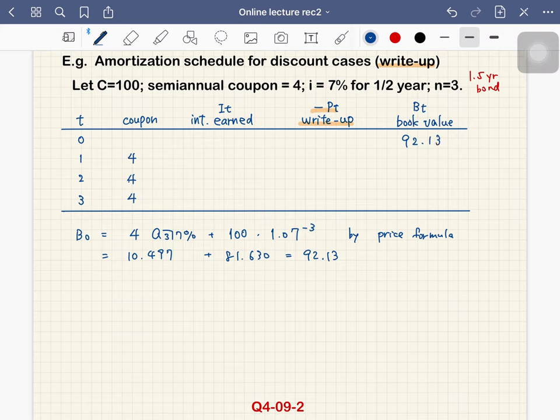OK, then we have 7% interest. So we can multiply 0.07 to get the interest. Then interest is actually 6.45. So 4 minus 6.45, that is write-down. But here, write-up.